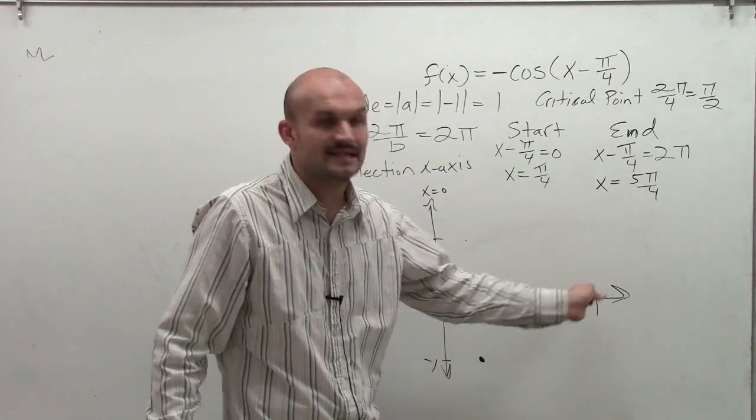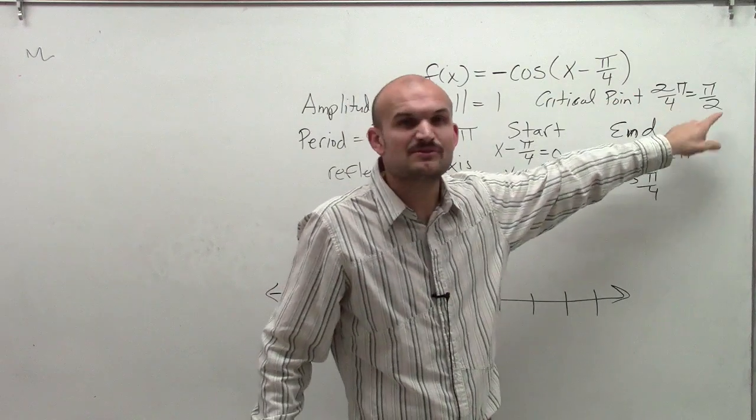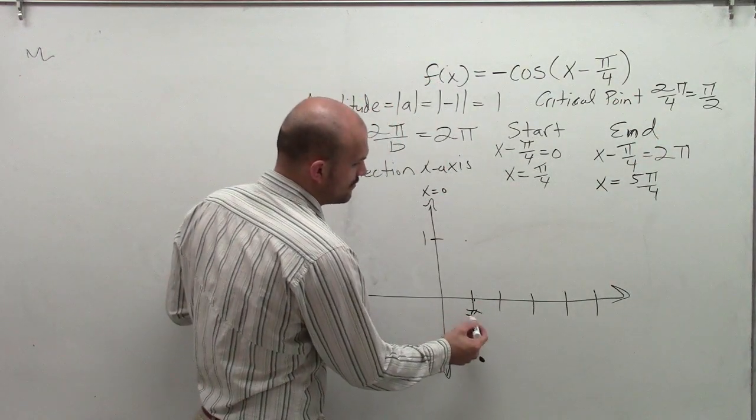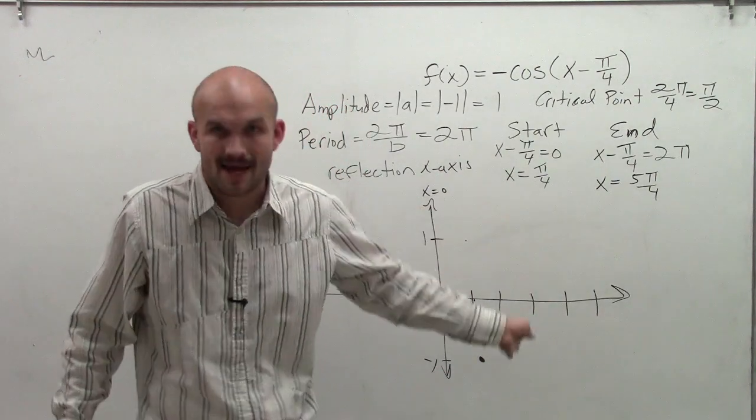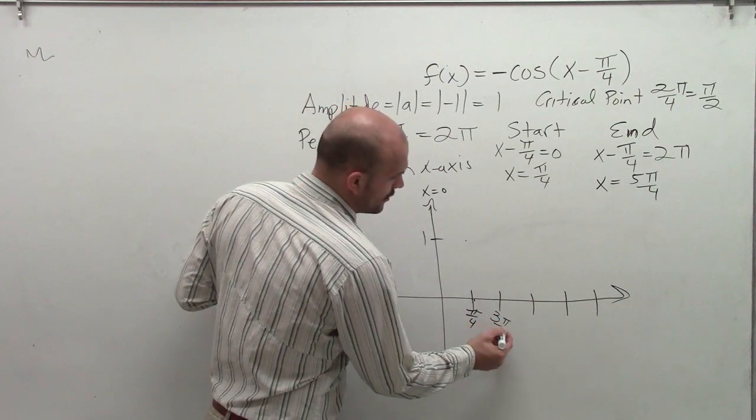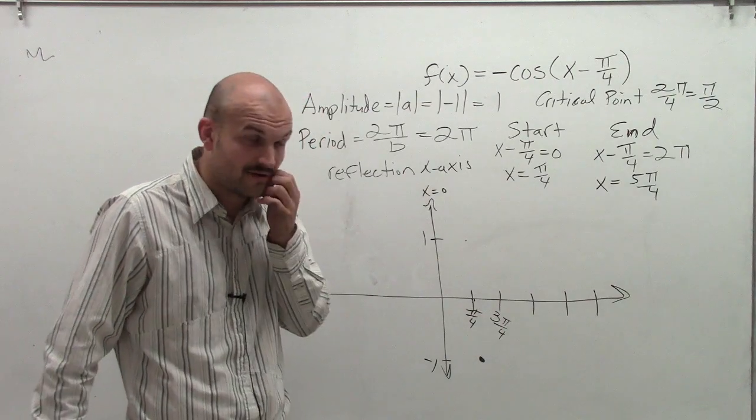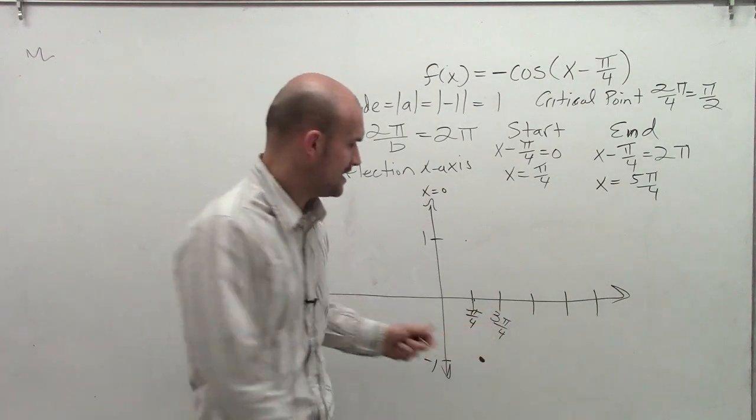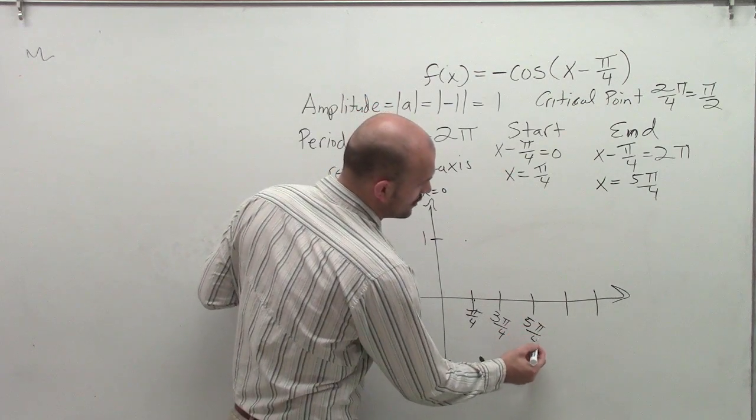So what are each one of these intervals? Well, remember, the critical points, the distance between the critical points is pi halves. So if this initial point is pi over 4, what I'm going to do is add pi halves to this. So therefore, my first point would be 3 pi, or the second critical point is going to be 3 pi over 4. Add another half to that, I'm going to get 5 pi over 4.